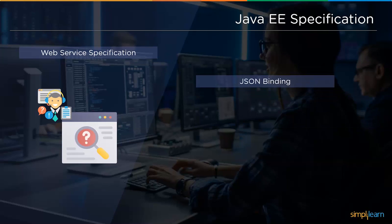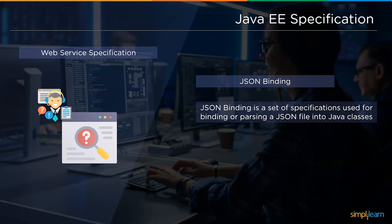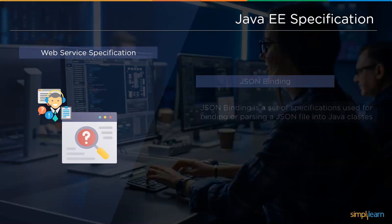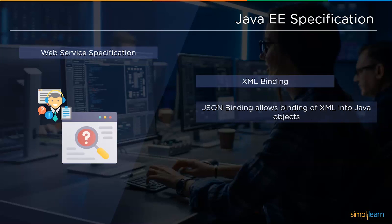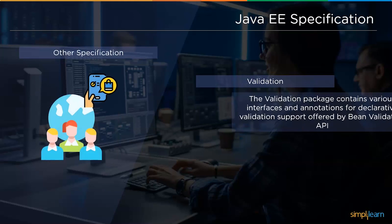Followed by JSON Processing, we have JSON Binding. The Java API for JSON Binding is a set of specifications that provide for binding or parsing a JSON file into Java classes. Next we have XML Binding, which allows binding of XML into Java objects. For example, SOAP is an XML-based protocol to access web services over HTTP, and this API allows you to create SOAP web services.